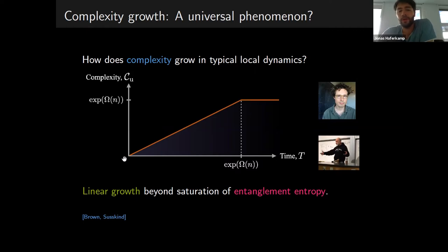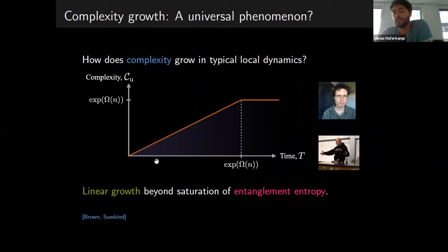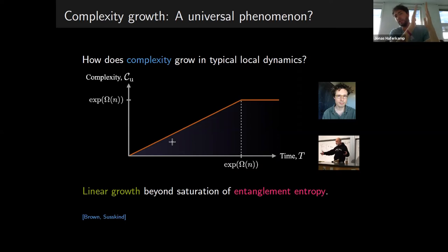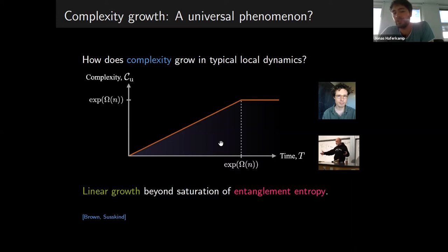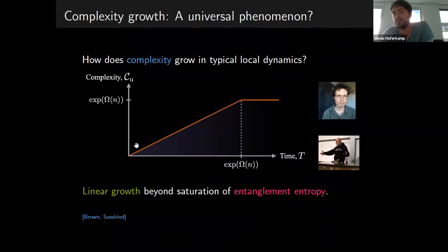For very early times, this is sort of well-established, because we know that entanglement grows linearly until it saturates after a polynomially long time. For example, starting with a brickwork circuit and just adding new layers — every time the multipartite entanglement keeps growing for most notions of entanglement. At some point, after a polynomially long time, this will saturate. But in the time where it grows, it provides circuit lower bounds that grow with the entanglement. So we know this holds for very early times, and the emphasis in this conjecture is on the exponentially long timescale.